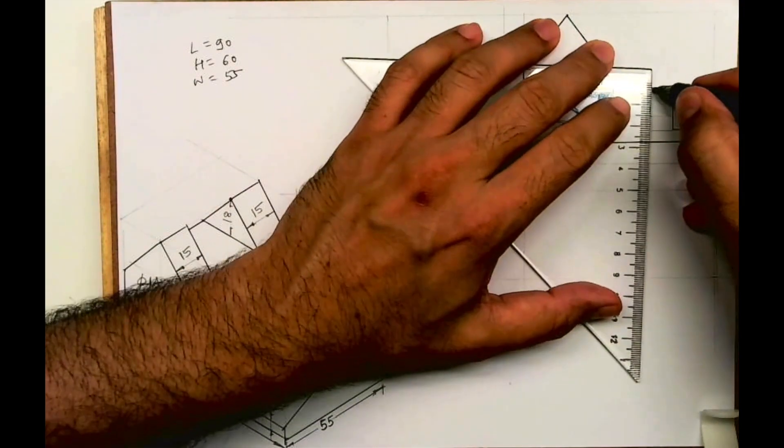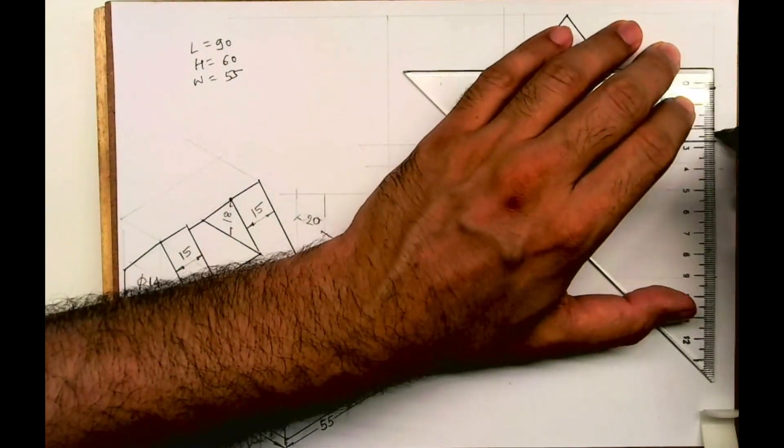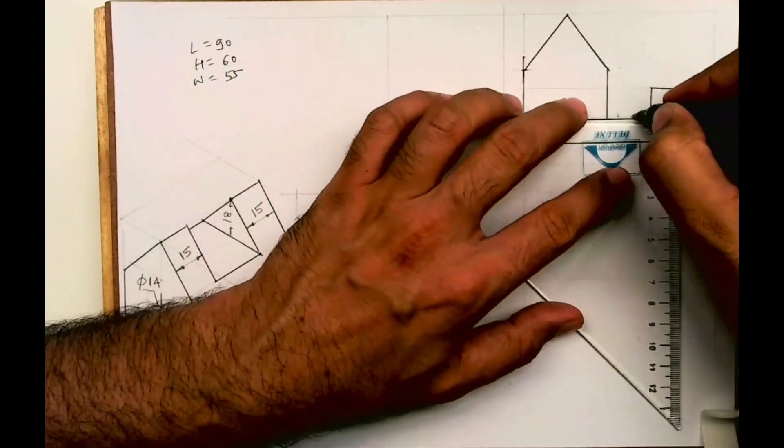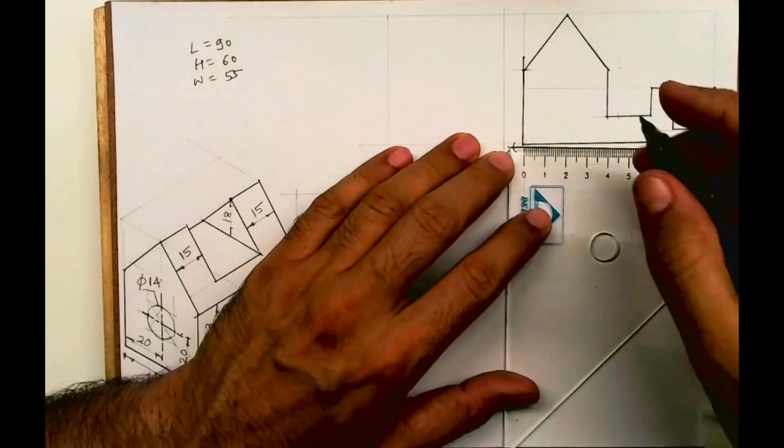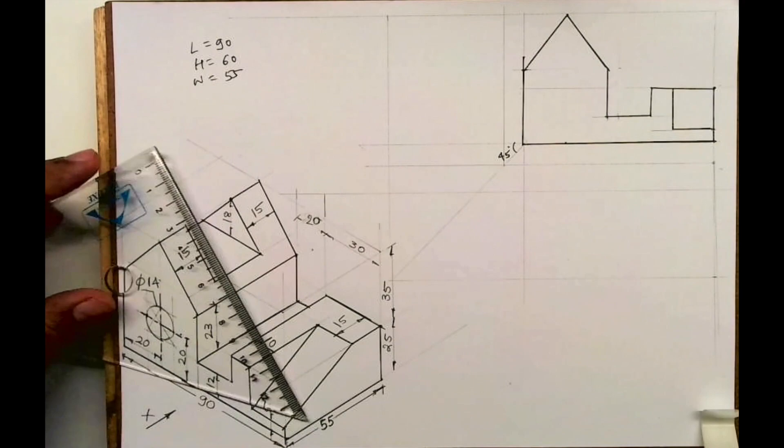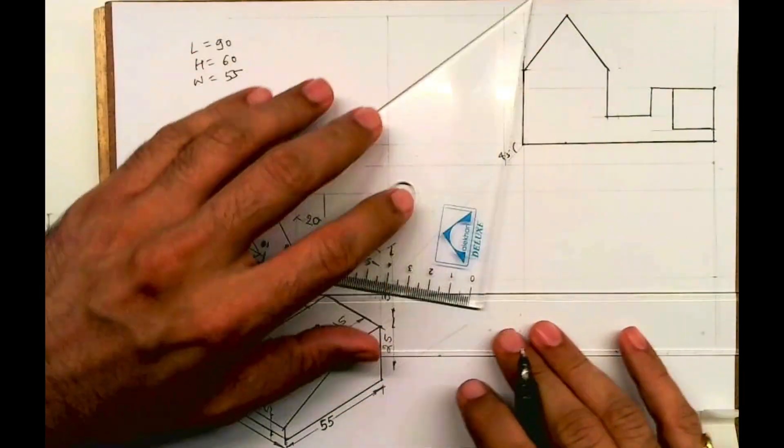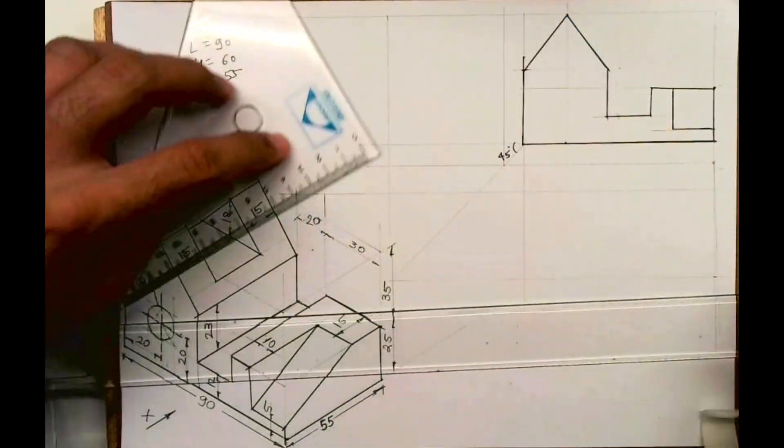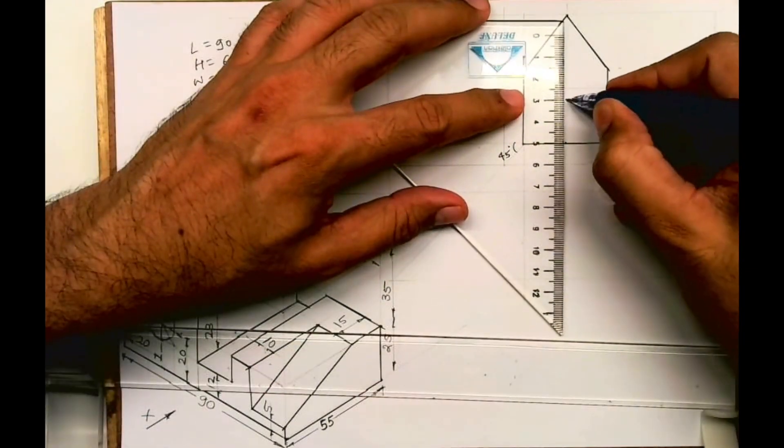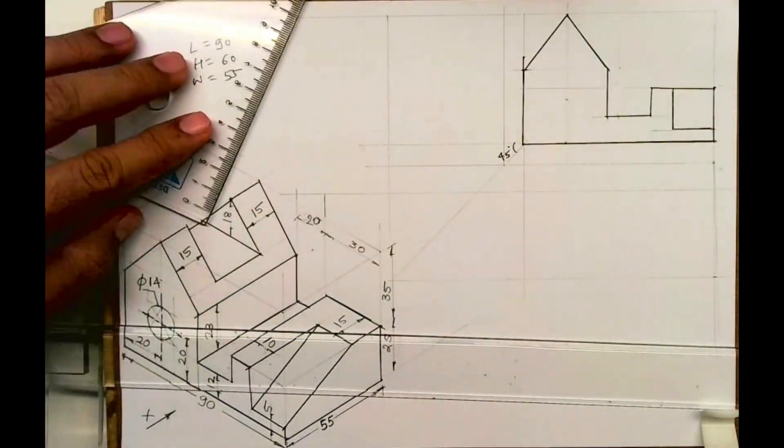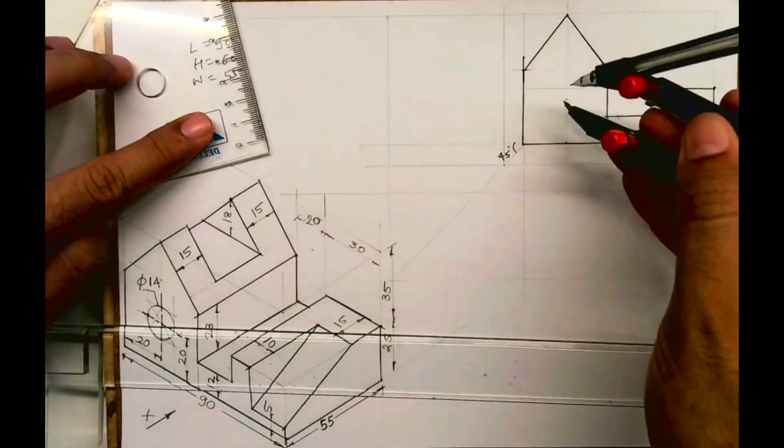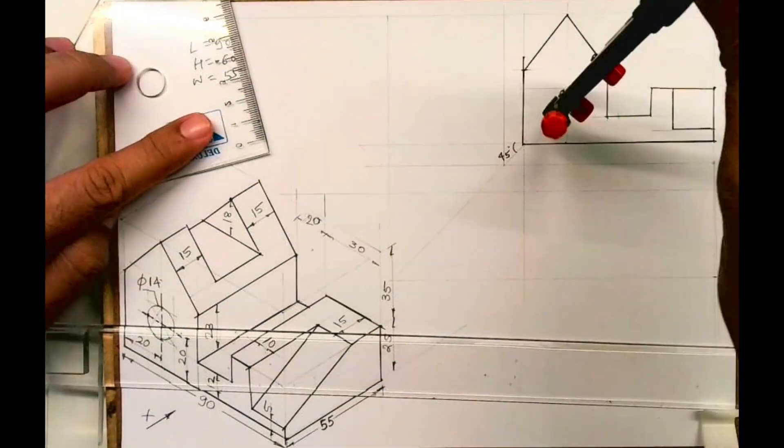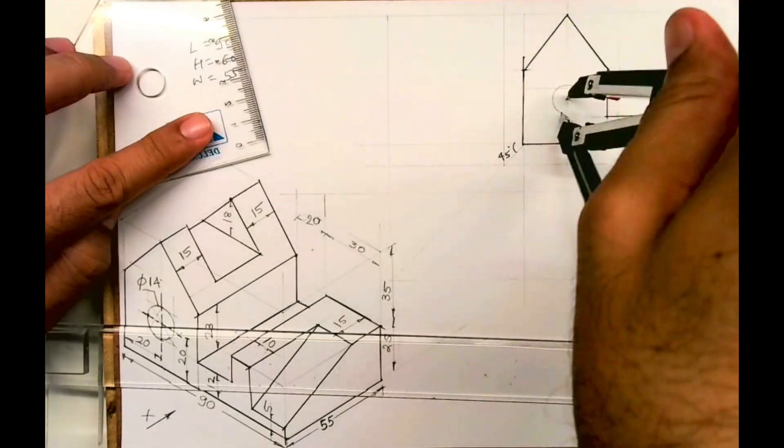This is a horizontal line, vertical. Now we need to draw a circle. Apart from that, everything is done in front view. We take radius 7 and we can draw a circle because diameter is 14.